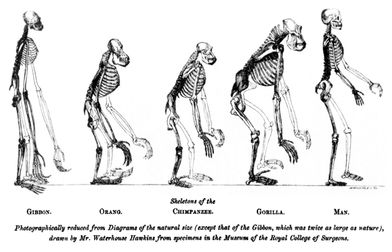Evolutionary ecology lies at the intersection of ecology and evolutionary biology. It approaches the study of ecology in a way that explicitly considers the evolutionary histories of species and the interactions between them. Conversely, it can be seen as an approach to the study of evolution that incorporates an understanding of the interactions between the species under consideration.